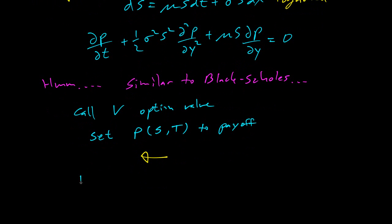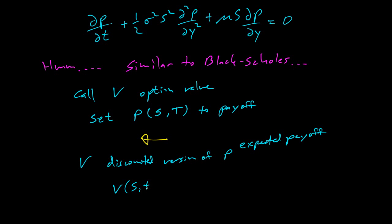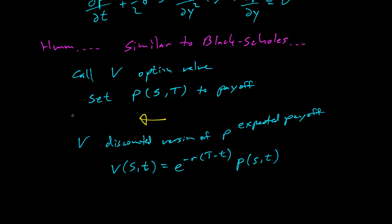How is V related to p? The answer is that V will be the discounted expected payoff. So p is our expected payoff and V will be the discounted version of the expected payoff. V of s,t is going to be e to the negative r difference of times times p of s,t. So p solving the differential equation here backwards, we get the expected value of the payoff, and here we're discounting it to the present and that will be our option value.